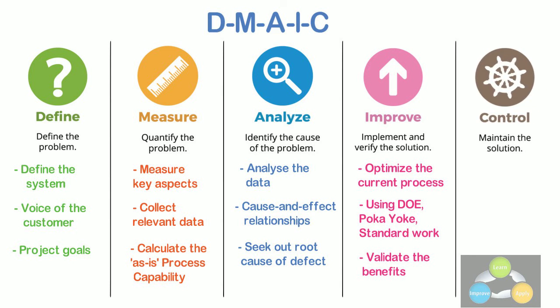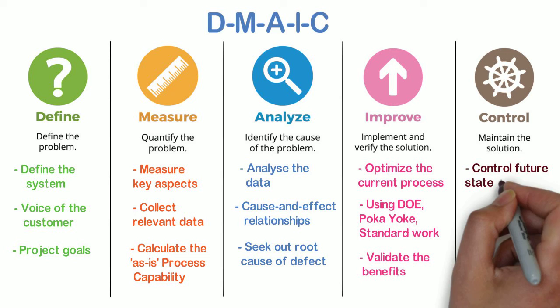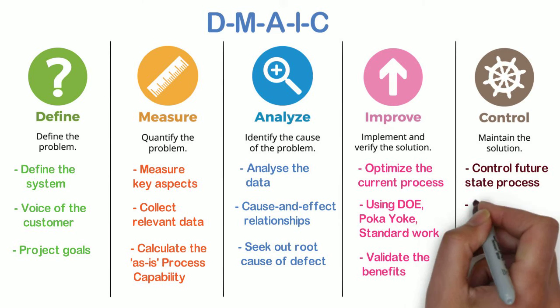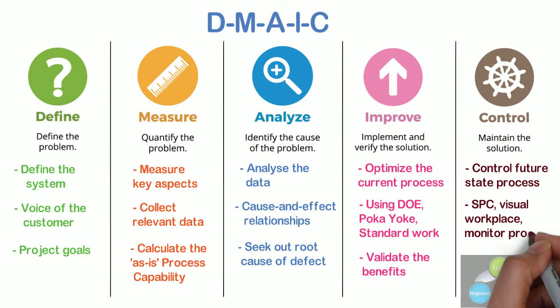And Control. The last and the most important phase in Six Sigma. We must control the future state process to ensure that any deviations from the target are corrected before they result in defects. It includes implementation of control systems such as statistical process control, production boards, visual workplaces, and continuously monitoring the process. This process is repeated until the desired quality level is obtained.